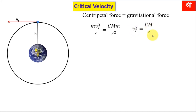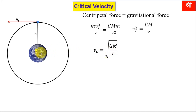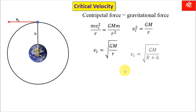Small m also gets cancelled, and from that we get Vc² = GM/r. Taking the square root of both sides, we get Vc = √(GM/r). But small r, the radius of this circular orbit, is equal to capital R plus h. Small r is the distance measured from the center of the Earth to the position of the satellite, that is capital R (radius of Earth) plus the height h. Therefore we can write Vc = √(GM/(R+h)).